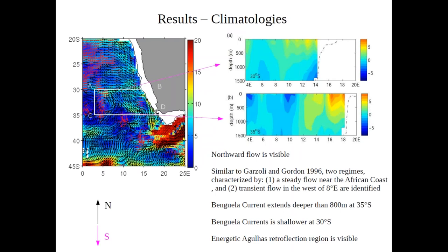This plot shows a map of currents at 15 meters depth. The black arrows show current flowing northward and south arrows show southward flow, with color indicating magnitude. There is a white space where we do not have coverage because that region is shallower than 1000 meters and Argo cannot go there. The 1000-meter isobath line is shown. The northward flowing Benguela current is clearly visible, as is the Agulhas retroflexion region. We also see two distinct regions: the more stable steady Benguela current region and the unsteady transient part, as shown by Garzoli.